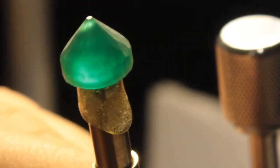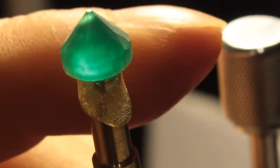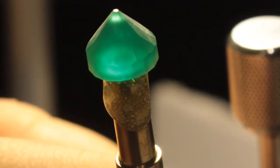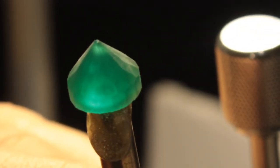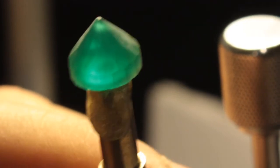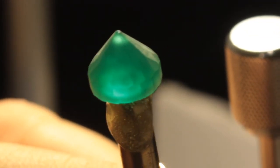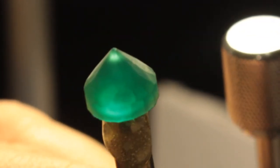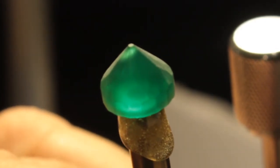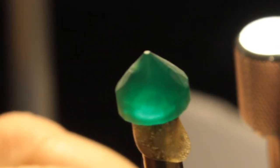Finished pre-forming our smaller piece of emerald using the 600 grit topper. So now I'll switch back to the larger emerald and continue with the 600 before changing laps.